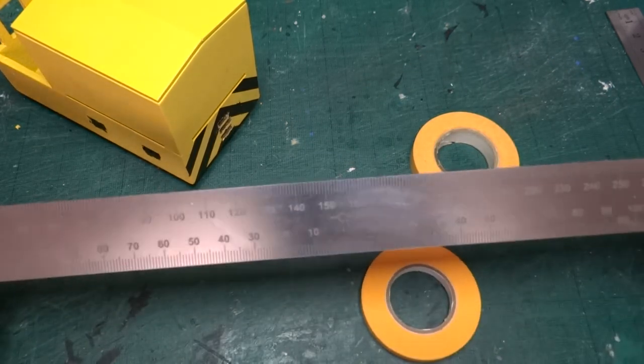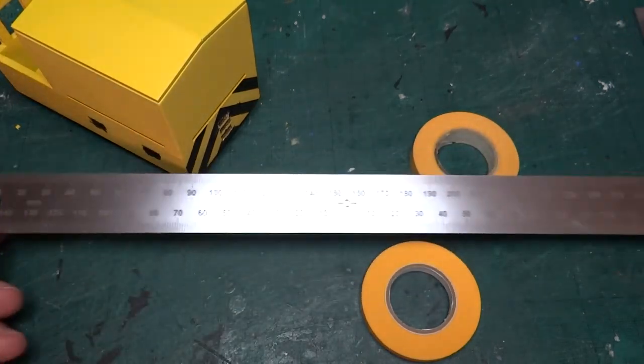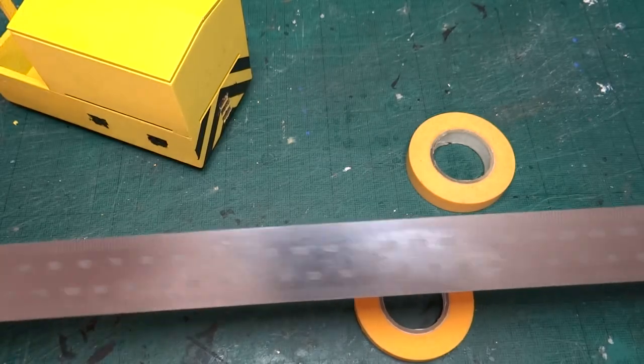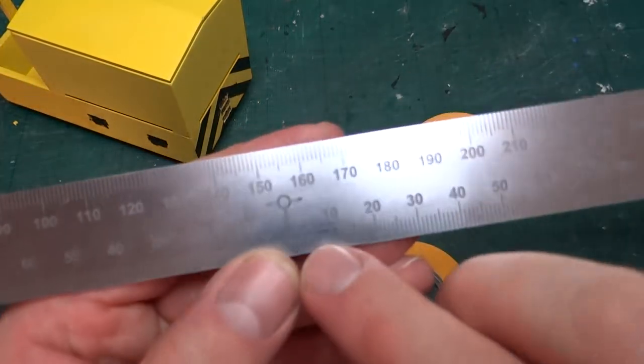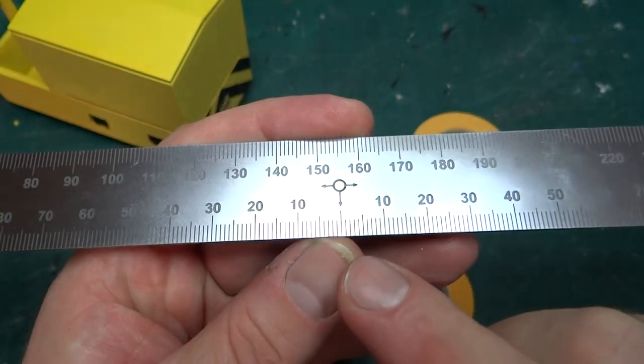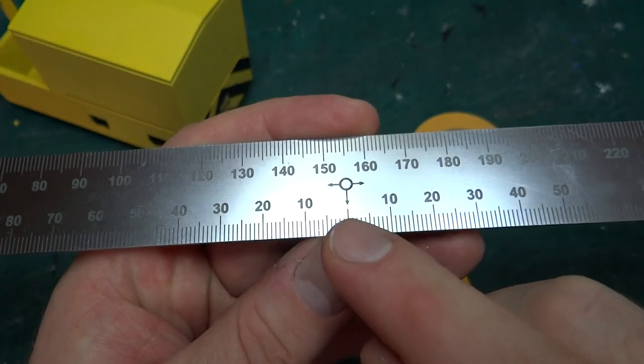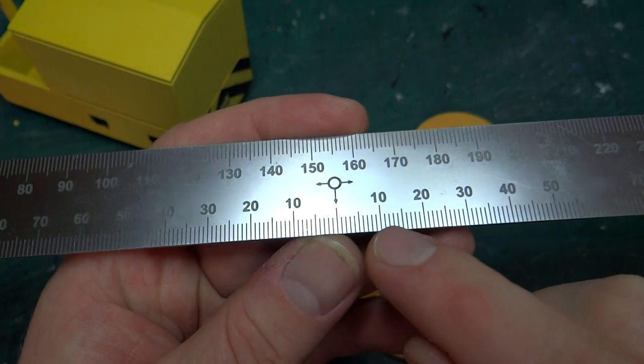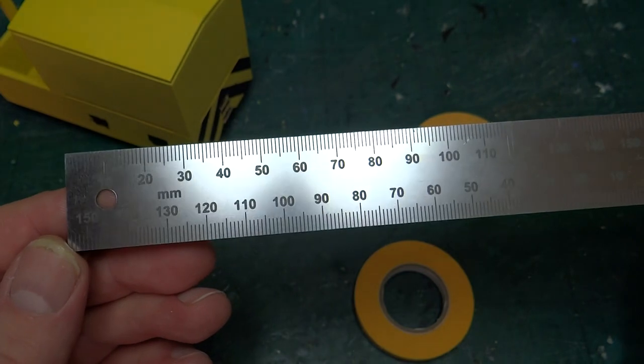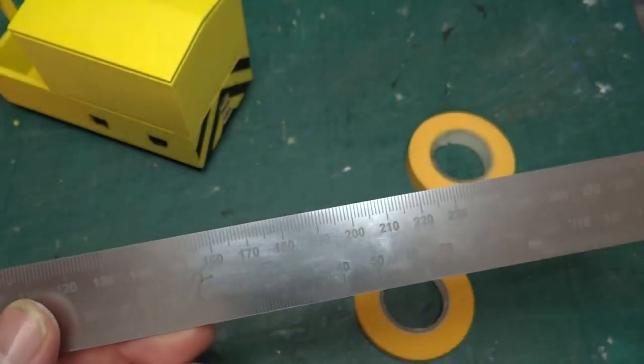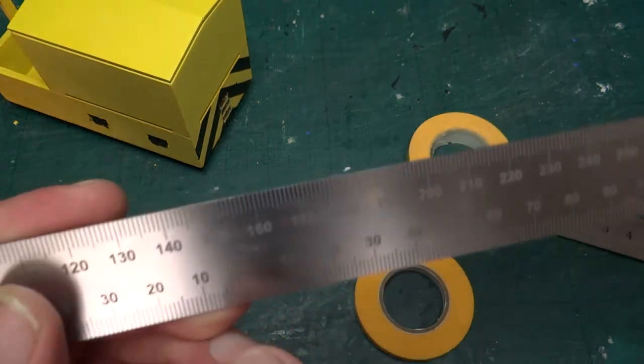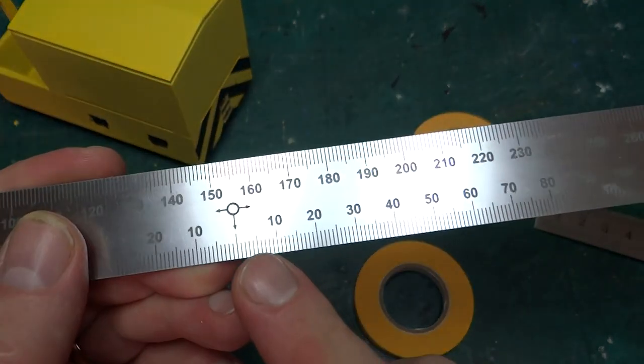But what I actually used was this ruler, now it's a bit long for the camera, but it's a 30 centimetre ruler, but the interesting thing is it's a centre finding ruler as well, so what you can see here, if I get the light right, is that it has a mark in the middle, and then counts up to 15 centimetres in both directions. So it's essentially two of these rulers stuck end to end to give me a centre point, which is here.